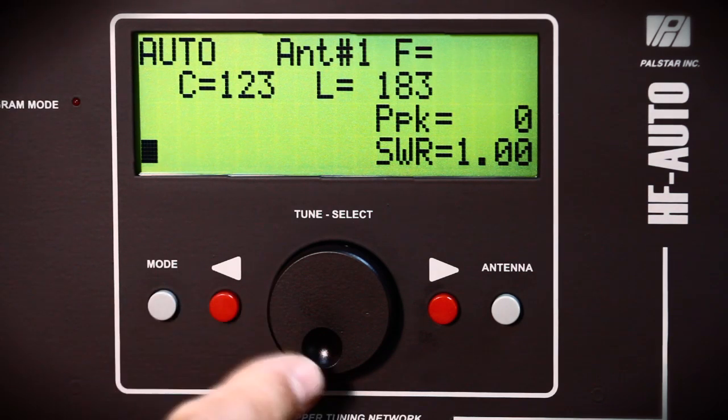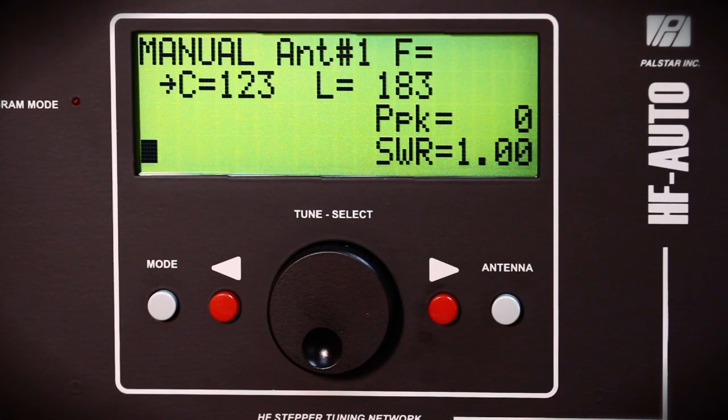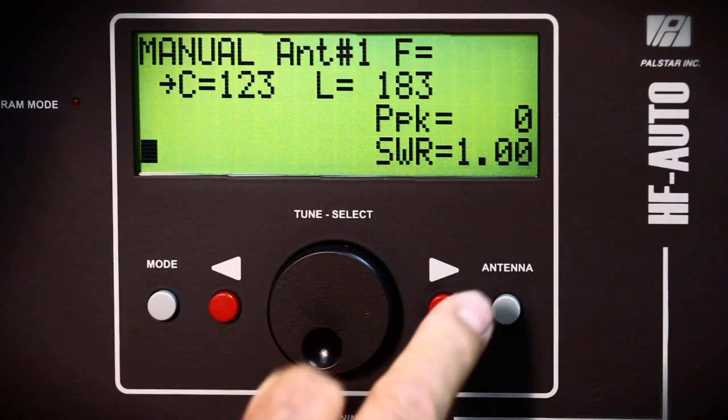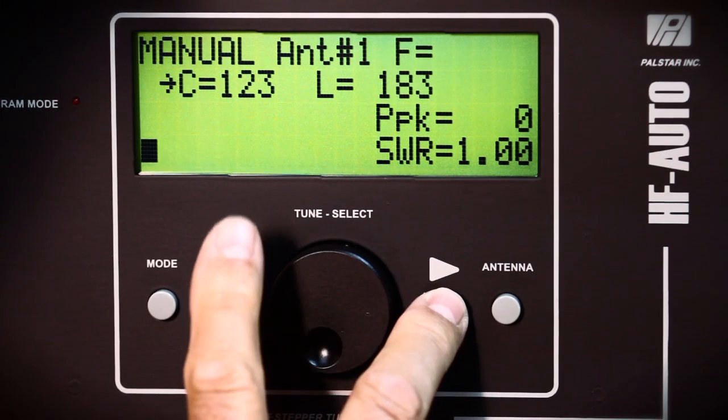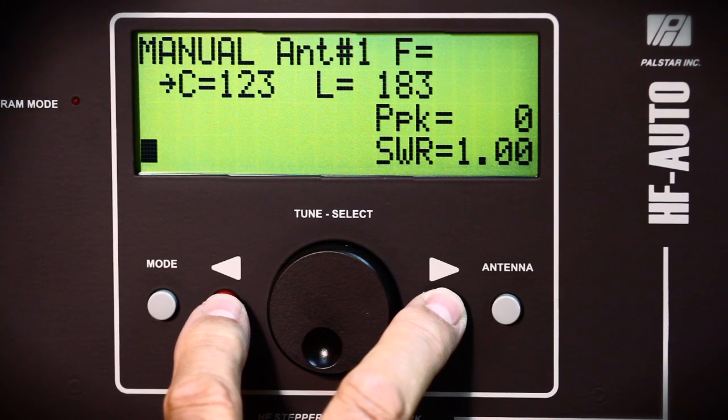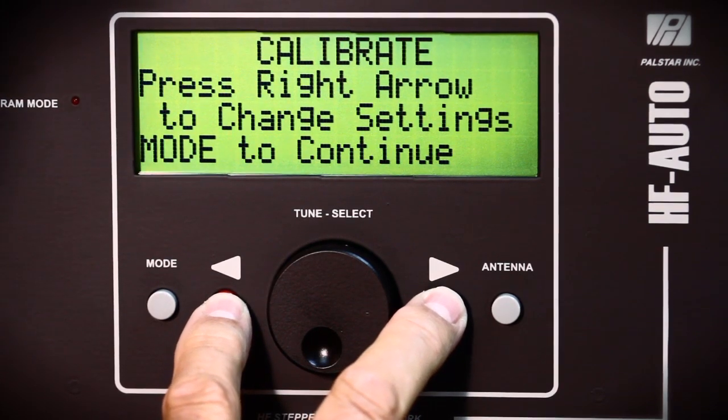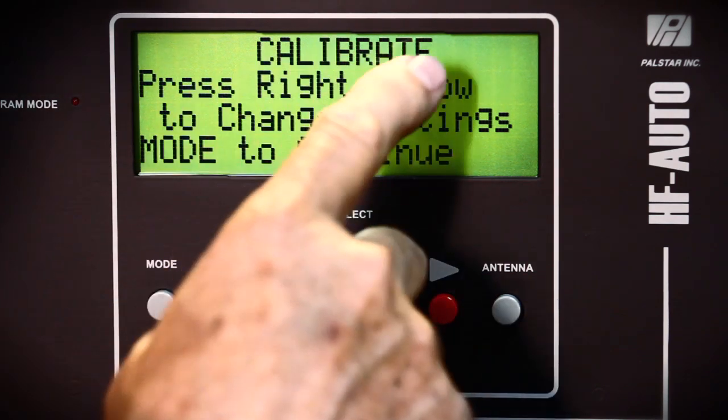So we push the mode button and we're going to go to manual. And I'm going to do this as carefully as I can. You put one finger on the red button to the right and the other finger on the arrow going towards the left. Push and hold, and you see it comes up calibrate mode.